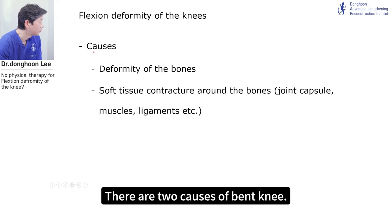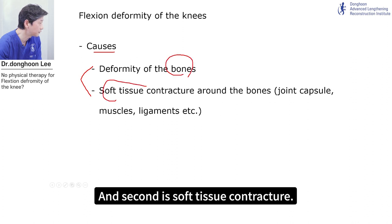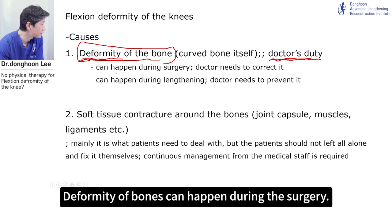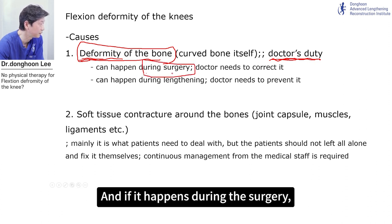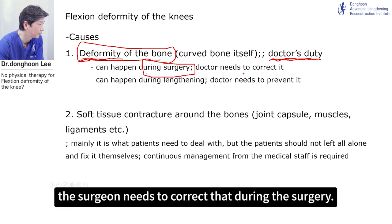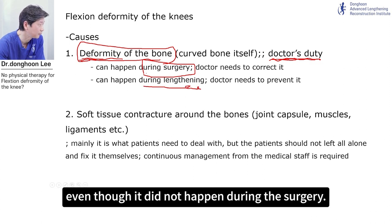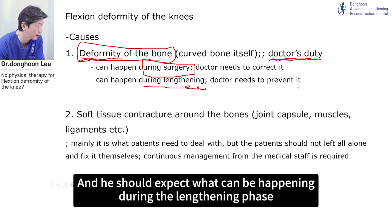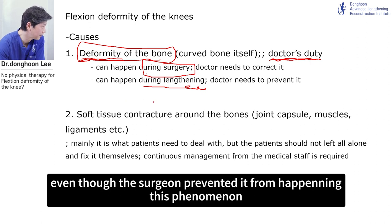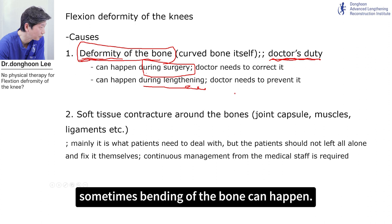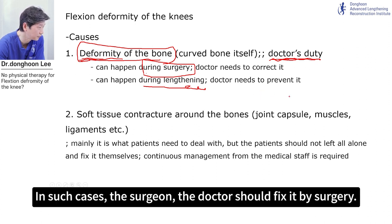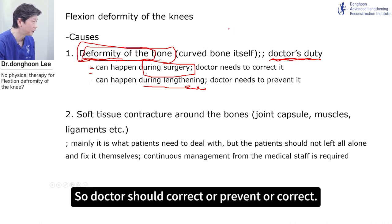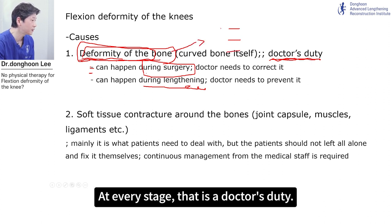There are two causes of bent knee. The first is deformity of bones, and the second is soft tissue contracture. If the bent knee comes from deformity of the bones, that is the doctor's responsibility. Deformity of bones can happen during surgery, and if it happens during surgery the surgeon needs to correct it. It can also happen during the lengthening phase, and the surgeon must prevent it and anticipate what can happen. Even if the surgeon tries to prevent it, sometimes bending of the bone can happen — in such cases the surgeon should fix it by surgery. At every stage during the lengthening phase, a deformity of bone can happen, so the doctor should prevent or correct it. That is the doctor's duty.